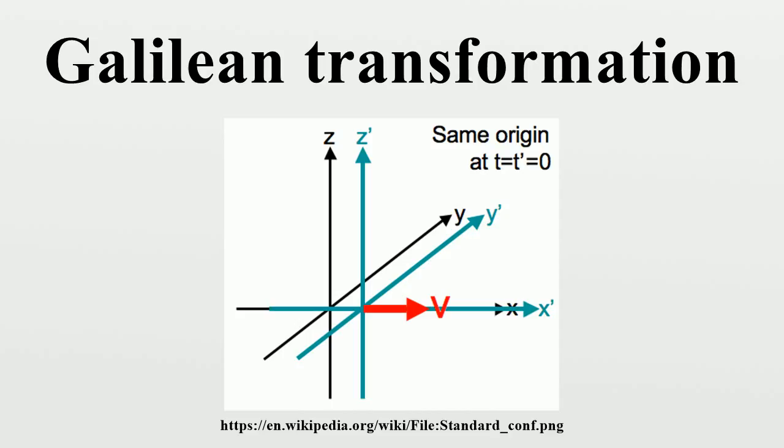Galileo formulated these concepts in his description of uniform motion. The topic was motivated by his description of the motion of a ball rolling down a ramp, by which he measured the numerical value for the acceleration of gravity near the surface of the Earth.